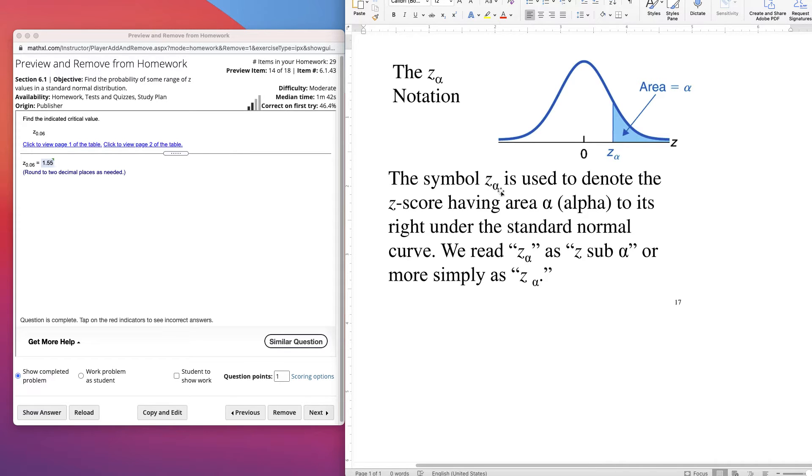So the symbol z sub alpha is used to denote the z score having the area alpha to its right under the standard normal curve. We read z sub alpha as z sub alpha or more simply as z sub alpha.